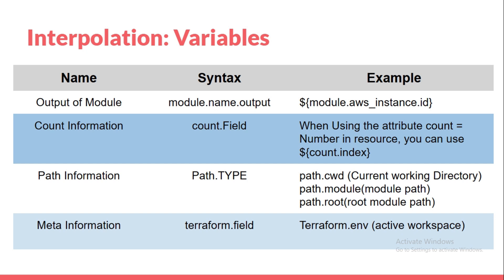Path is used for fetching different path information. Path dot cwd gives the current working directory, path dot module gives the module path, and path dot root gives the root path. Metadata is used for getting information about the Terraform environment — for example, terraform dot workspace returns the active workspace.